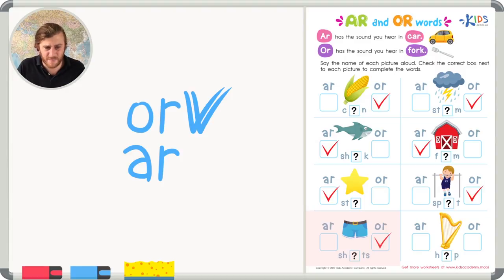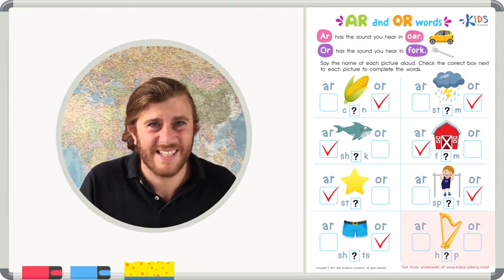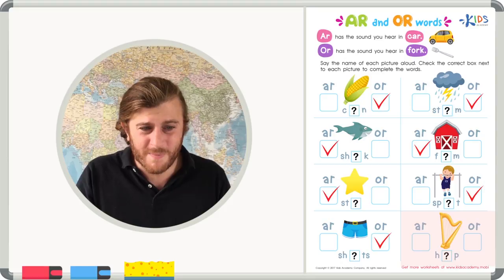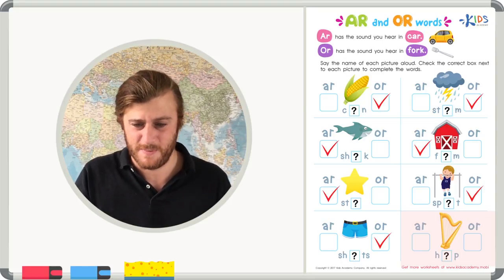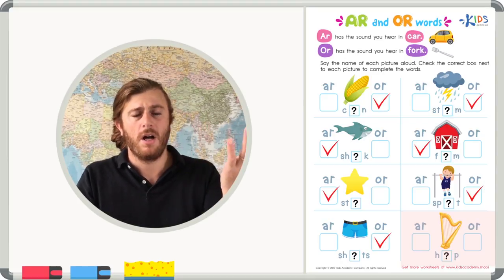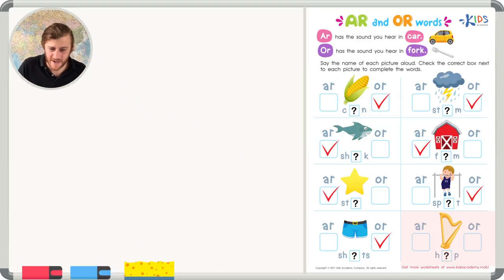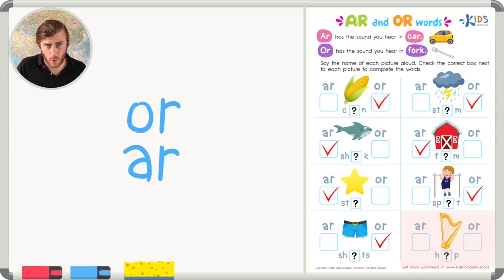And finally, our last picture. What do you see? I see a harp. Have you ever seen a harp before? They're really cool instruments. Let's try sounding it out. H-a-arp. Harp. Which did you hear? A-R or O-R? Ha-a-arp or ho-o-orp? I think it's A-R. Harp. Because ho-o-orp just doesn't sound right.